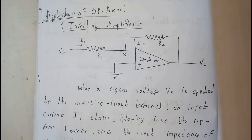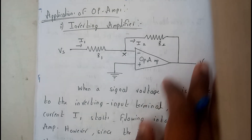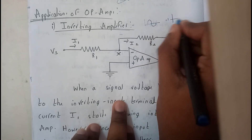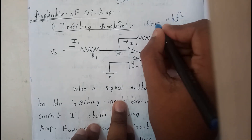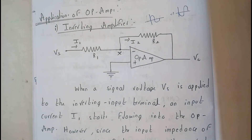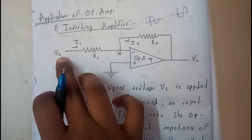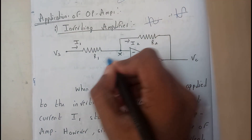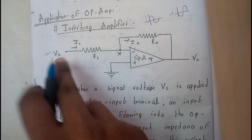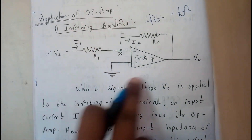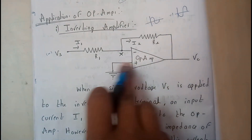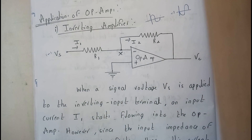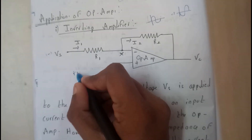Let us go through the first application, that is the inverting amplifier. Basically, 'inverting' means if you give this input you're going to get the inverted one as your output. The circuit is set up so that we are using the inverting terminal, and the non-inverting terminal will be grounded.